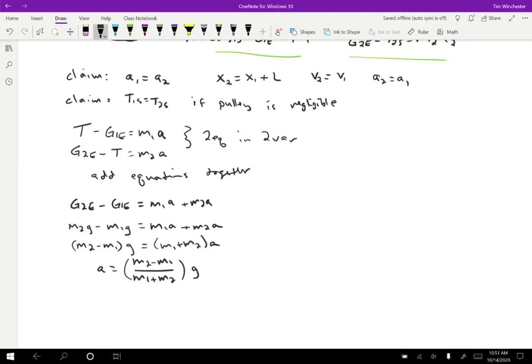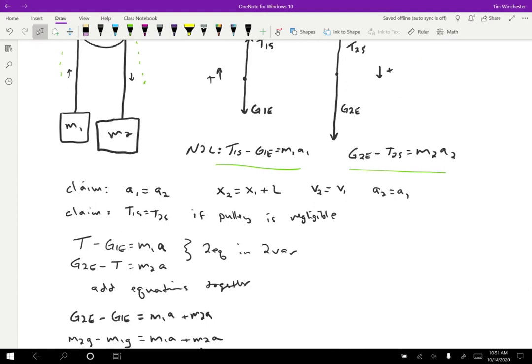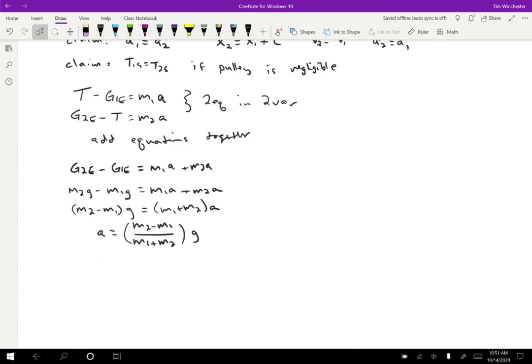What if one of the masses is zero? If M1 is zero, I expect M2 to just be in free fall. If M1 is zero, then I get M2 on top and just M2 on bottom, so the acceleration is equal to G. That also makes sense. This expression makes sense, we can check it in a couple of ways and that gives us the correct answer.